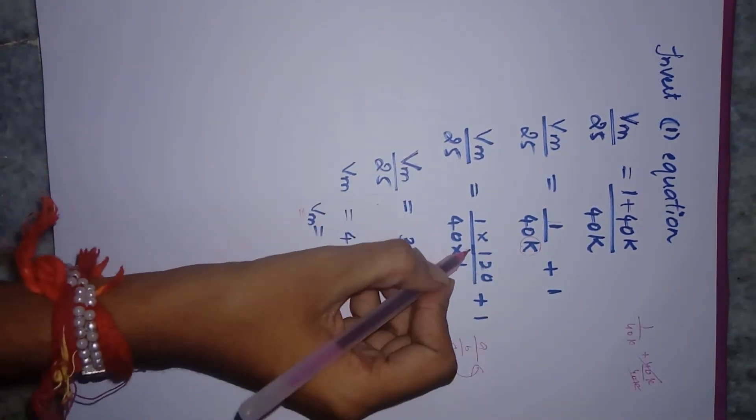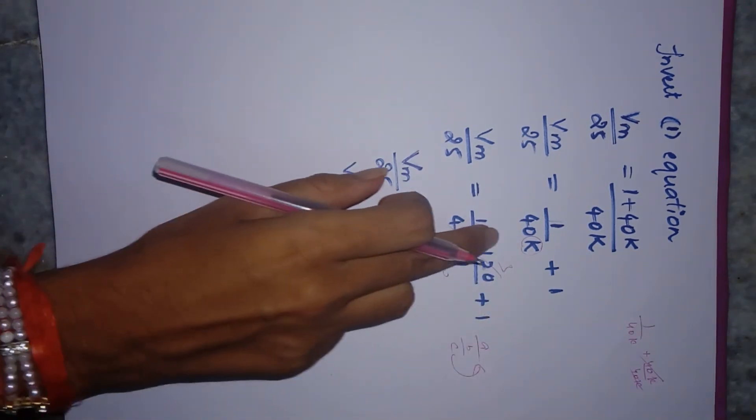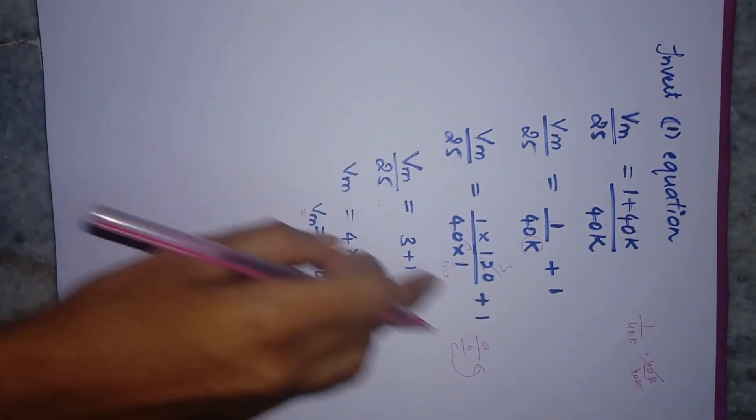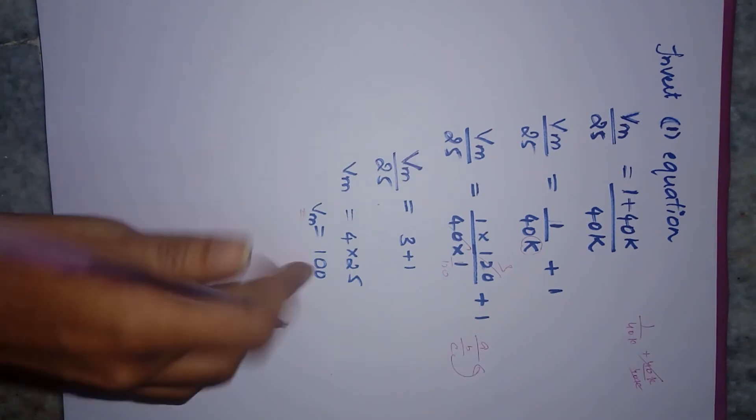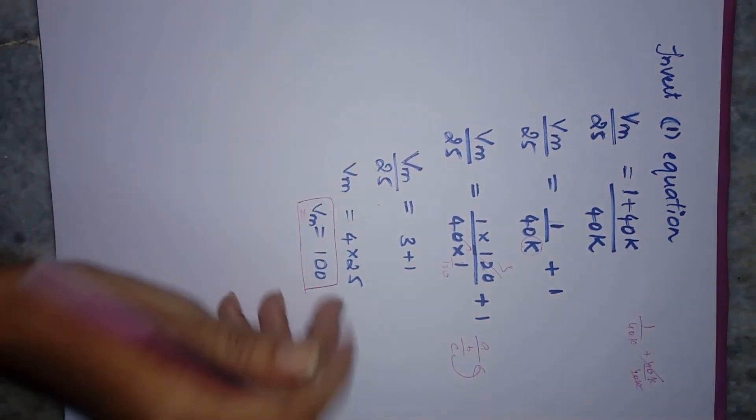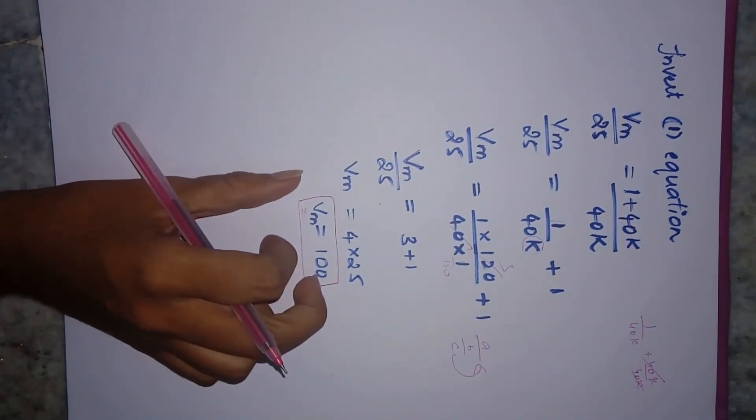So Vm comes out to be 100, and this is your observed volume. This is the way you have to solve the question.